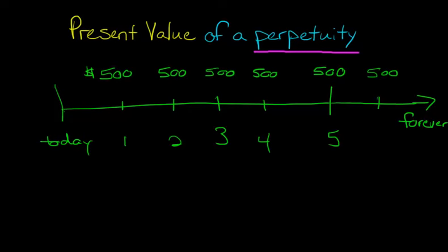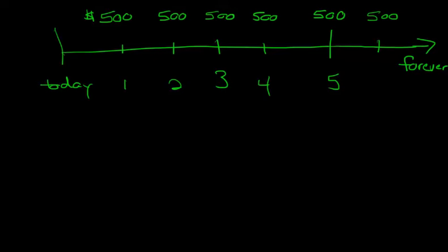So the nice thing is that there's a really simple formula to calculate the present value of, for example, receiving $500 forever. And that formula is just the present value of the perpetuity is equal to the cash flow, which is C, cash flow, which is going to be that $500, that cash flow divided by the discount rate.